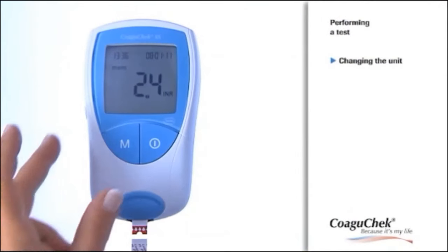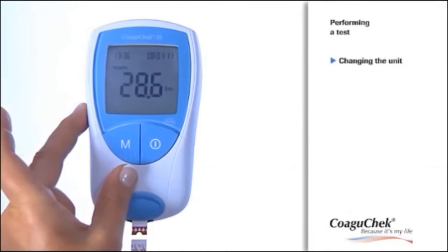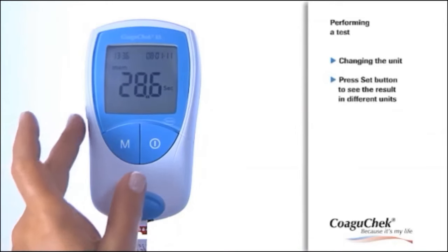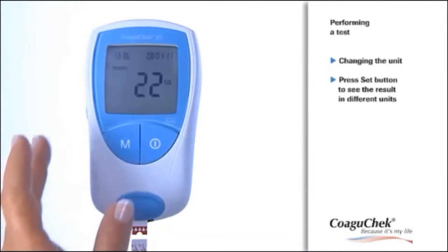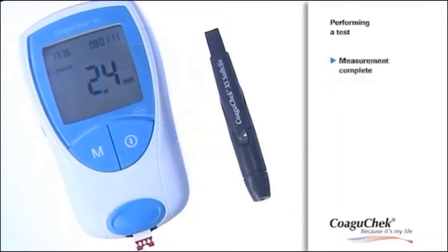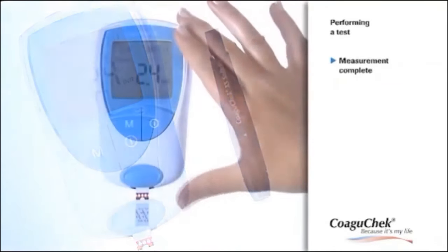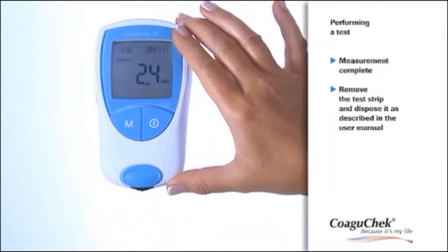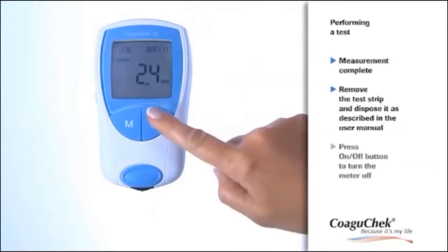Now you can change the unit if you wish by pressing the set button. The result of the actual measurement is displayed in the INR value, in seconds, or in the quick value. Congratulations, you have successfully completed the measurement. Please remove the test strip and press the on-off button to turn the meter off.